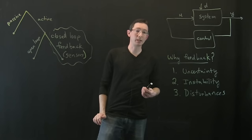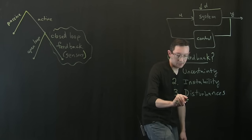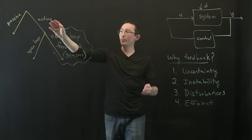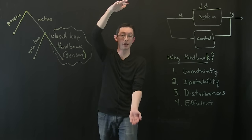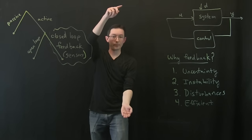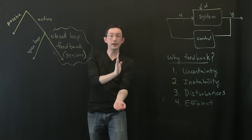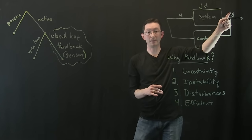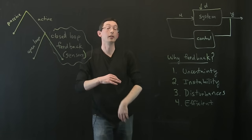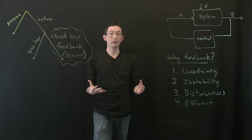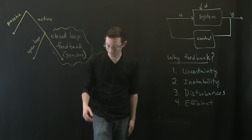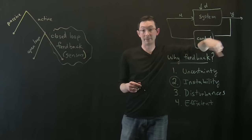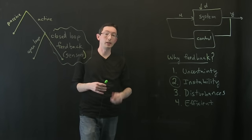The fourth benefit is efficiency. In the open loop pendulum case I constantly had to pump energy in, but with elegant sensor-based feedback control, if you're doing a really good job the system is barely moving and you almost have to put no energy in to correct it. Effective sensor-based feedback control is also much more efficient, which is really important — for example, if you're sending a rocket somewhere, you need an efficient controller because you don't want to waste fuel.